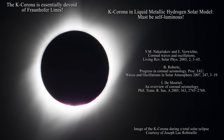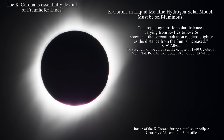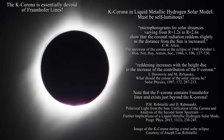It has been known for nearly 80 years that the k-corona reddens with increasing distance from the solar surface, directly implying that the self-luminous corona is cooling with elevation. A 1946 quote states: 'Microphotograms for solar distances varying from R=1.2 to R=2.6 solar radii show that the coronal radiation reddens slightly as the distance from the Sun is increased.' A more recent quotation notes: 'Reddening increases with height due to the increase of the contribution of the f-corona.' The f-corona is likely simply the k-corona which has sufficiently cooled to reflect photospheric light — that is why Fraunhofer lines are now seen in the f-corona.